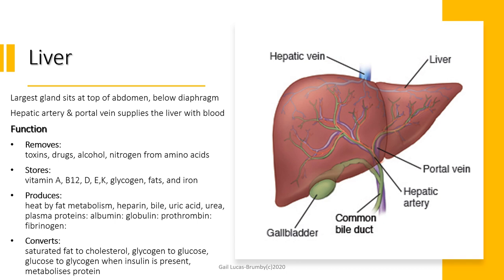The liver is a vital organ for the removal of toxins, storing nutrients, producing vital components of blood clotting, and converting fats, glucose and glycogen. In a transplant, if you transplant 60% of the liver into somebody else's body, the donor's remaining liver will regrow to its entirety. It has enormous powers of recuperation.